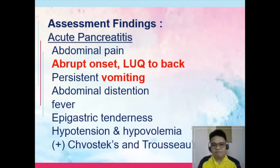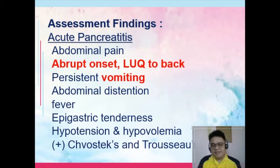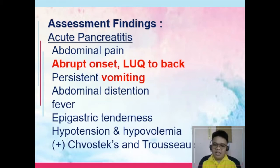Assessment findings in acute pancreatitis include abdominal pain — specifically epigastric pain — that tends to be abrupt in onset and radiates from the left upper quadrant to the back. There is also persistent vomiting, abdominal distension, fever, and epigastric tenderness, which is related to the location of the pancreas. Hypotension and hypovolemia are also present, though they are more prominent in acute hemorrhagic pancreatitis.